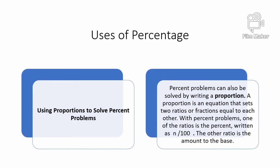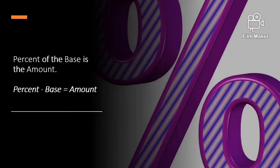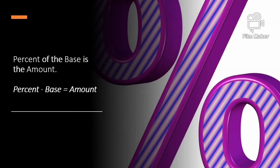Using proportion to solve percent problems. Percent problems can also be solved by writing a proportion. A proportion is an equation that sets two ratios or fractions equal to each other. One of the ratios is the percent, written as n divided by 100. The other ratio is the amount to the base. Percent times base equals the amount. Percent equals the amount divided by the base.